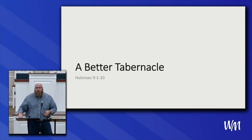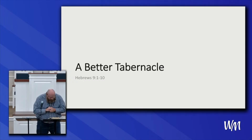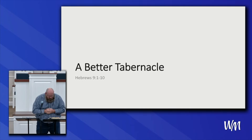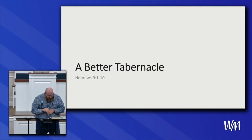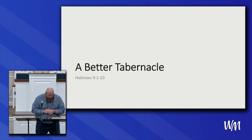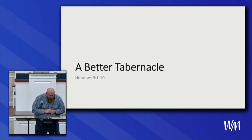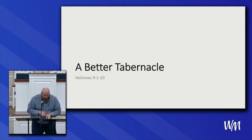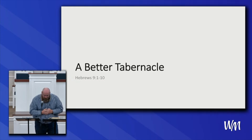Let's read Hebrews chapter 9 verses 1 through 10. 'Then verily the first covenant had also ordinances of divine service and a worldly sanctuary. For there was a tabernacle made — the first, wherein was the candlestick and the table and the showbread, which is called the sanctuary. And after the second veil, the tabernacle which is called the holiest of all, which had the golden censer and the ark of the covenant overlaid round about with gold, wherein was the golden pot that had manna and Aaron's rod that budded and the tables of the covenant. And over it the cherubims of glory shadowing the mercy seat, of which we cannot now speak particularly.'